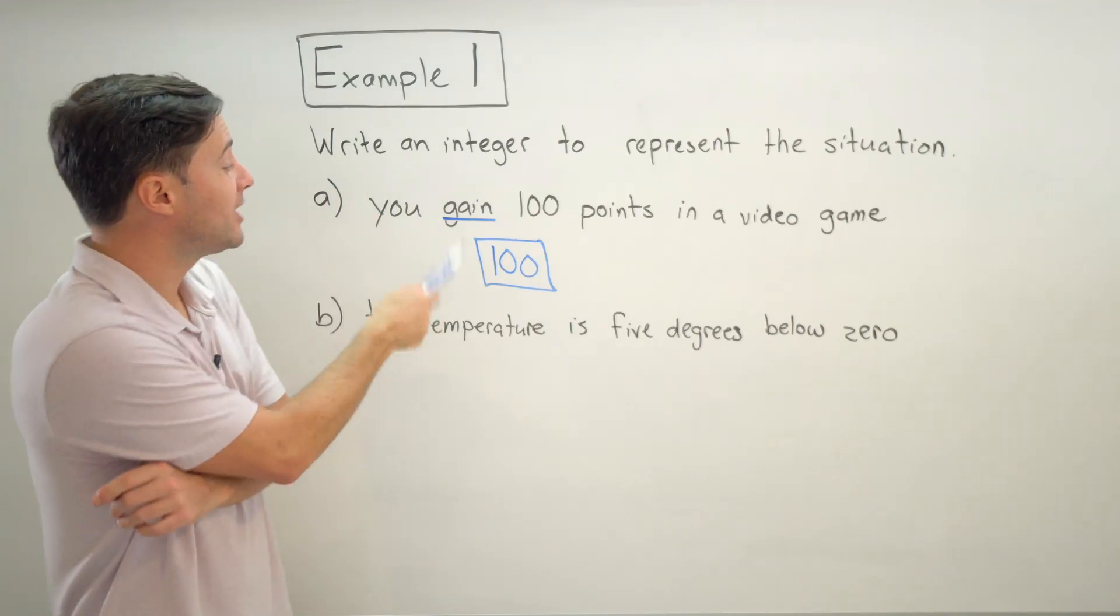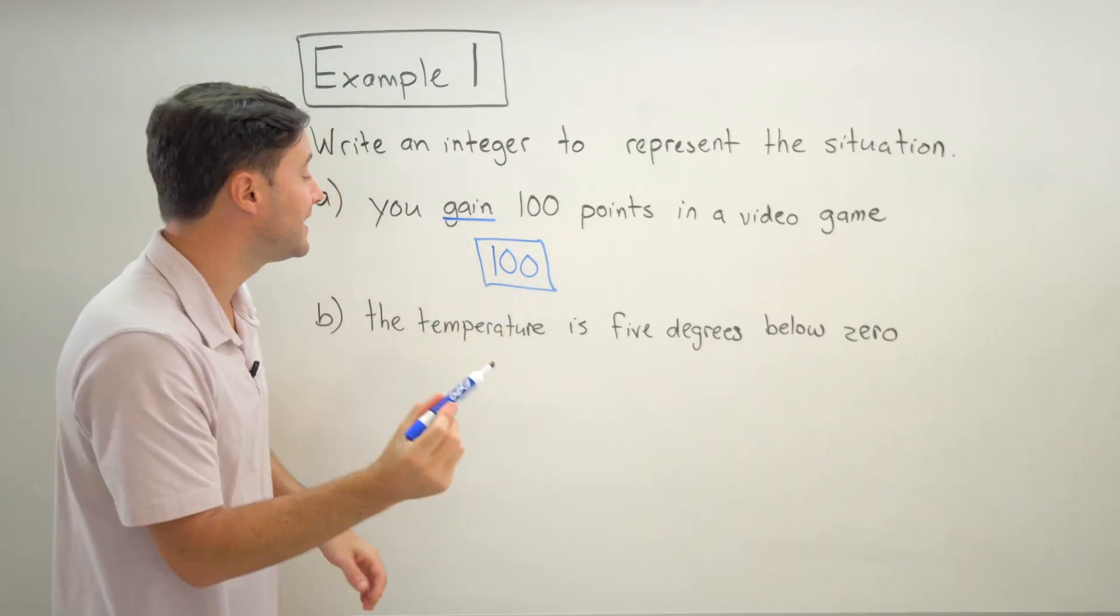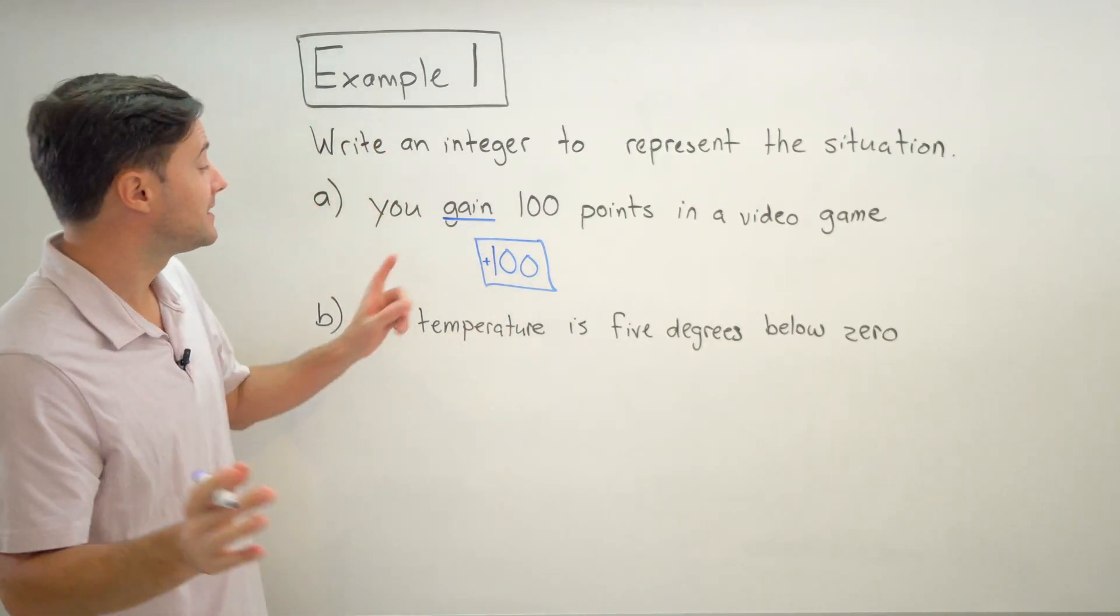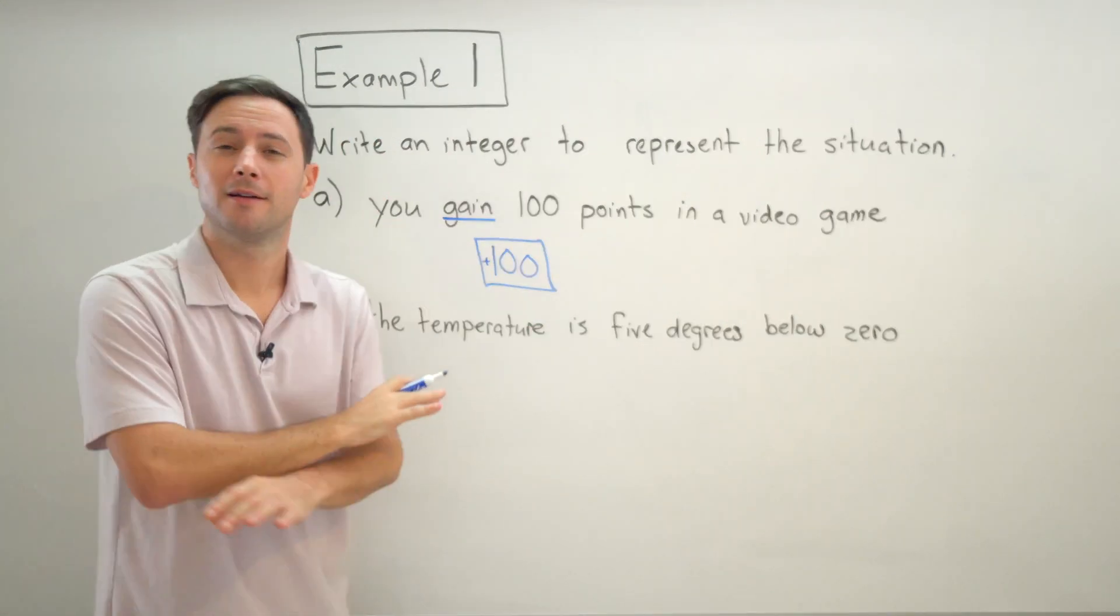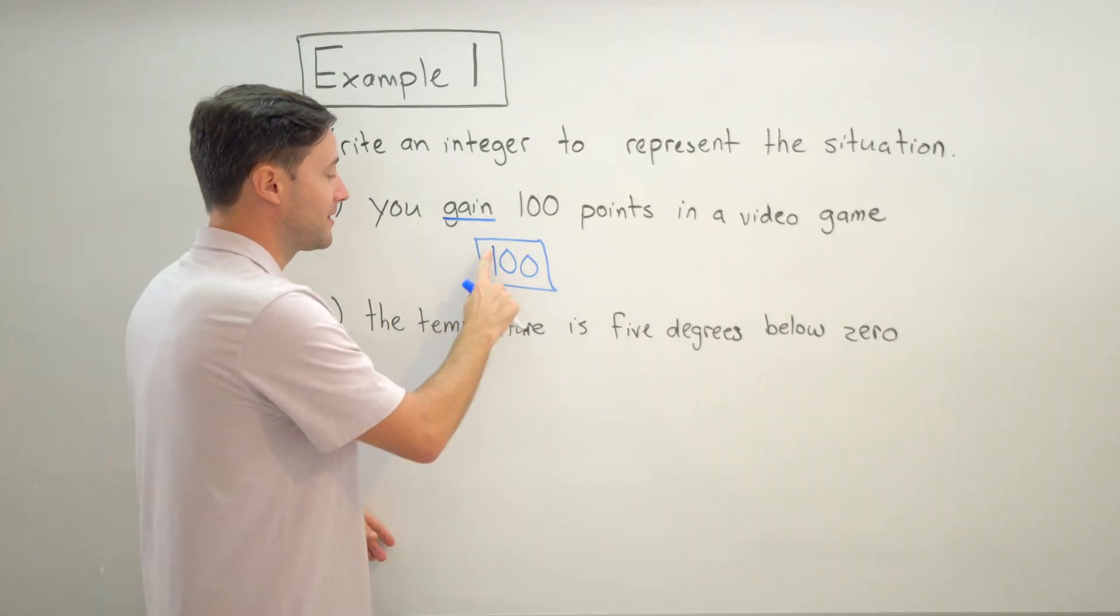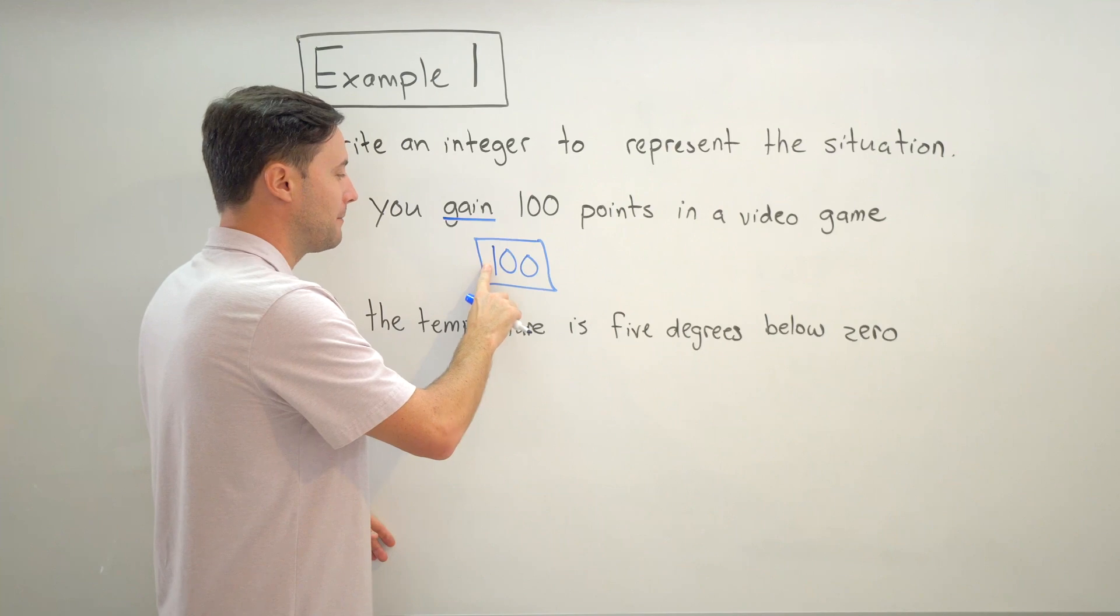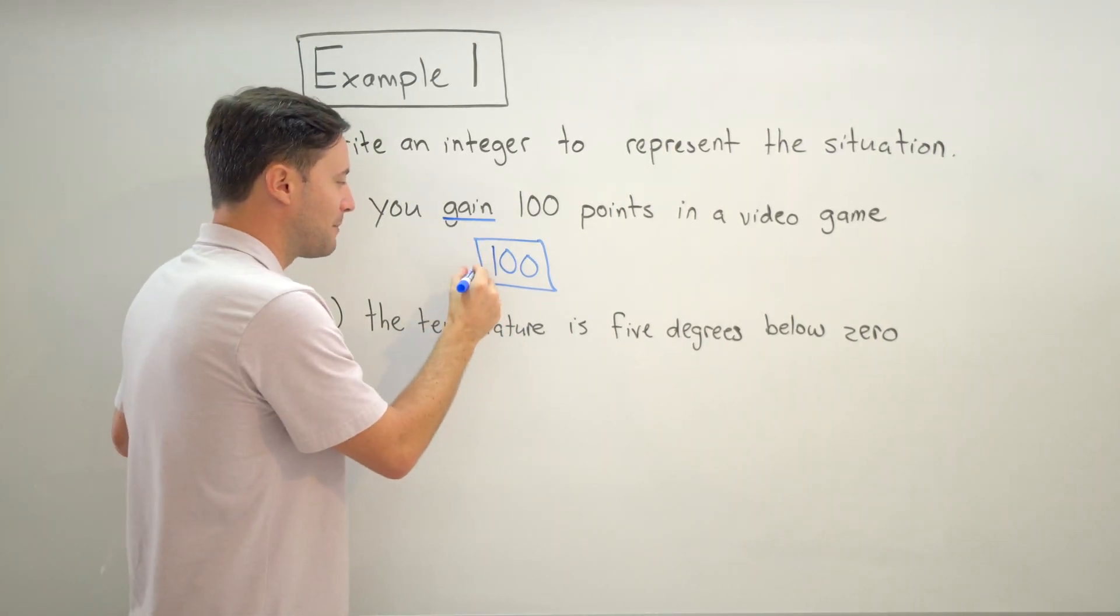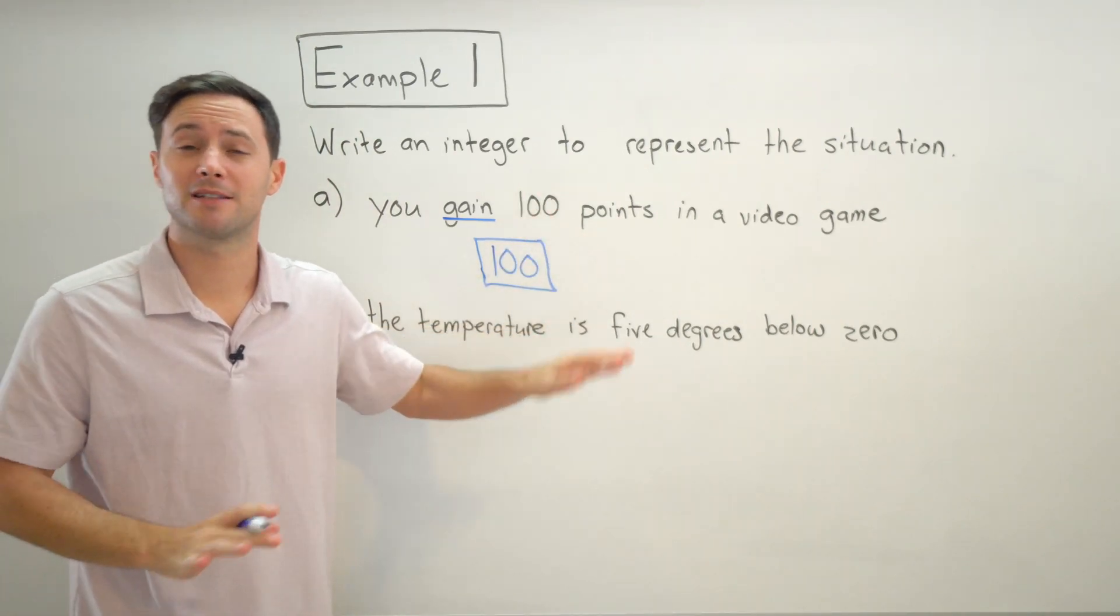Now notice I just wrote the number 100. I didn't put a positive symbol like that in front. Technically that's still correct, however we almost never write - if a number is positive we just write the number and we know that that means it's positive. So my suggestion is just write the number if it's positive. Don't worry about putting a little positive symbol.